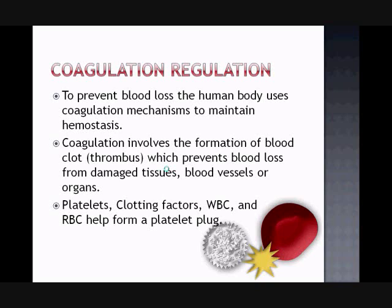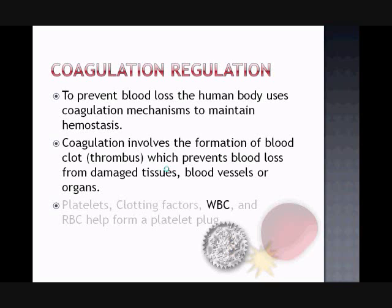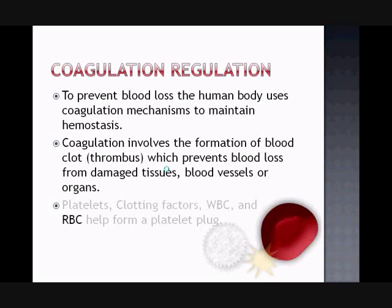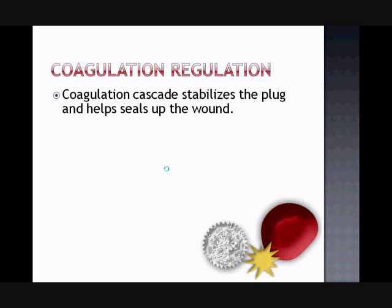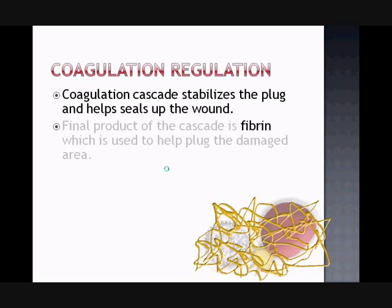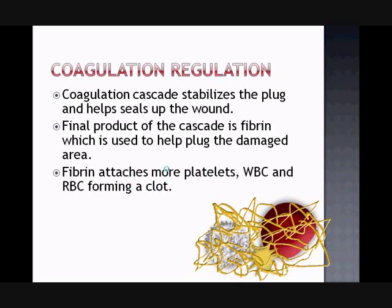This process involves platelets, clotting factors which are proteins not depicted here, white blood cells and red blood cells which help to form the platelet plug. This initial plug is not strong enough to completely seal the wound and is only a temporary intermediate step in the final clot formation. The coagulation cascade stabilizes this plug by its formation of fibrin, which brings together the platelets, white blood cells and red blood cells to form the more stable clot.